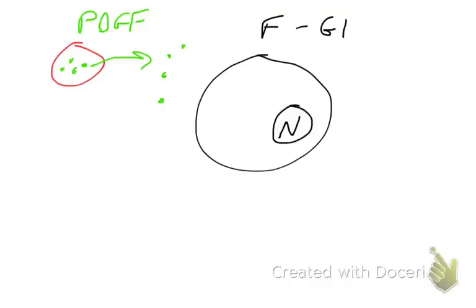right? But the signal needs to go into the cell, because the DNA is in the nucleus. The genes that control S-phase progression, they're all in the nucleus. How does a signal get from the extracellular space into the nucleus?